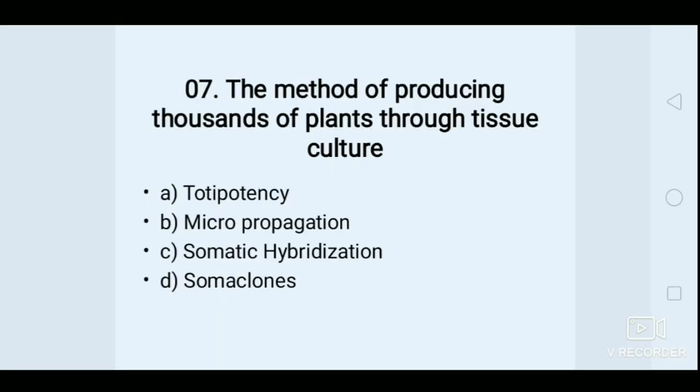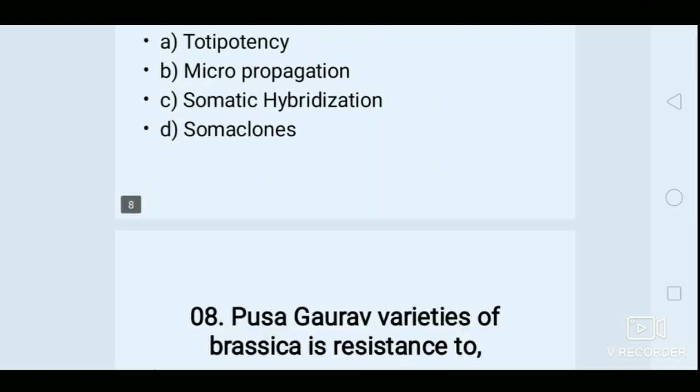The method of producing thousands of plants through tissue culture — Options: A. Totipotency, B. Micropropagation, C. Somatic hybridization, D. Soma clones. Answer: B. Micropropagation.